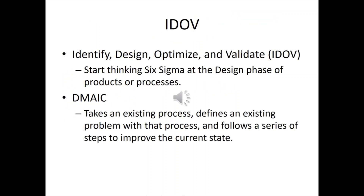The process I like to use for getting a new product or process: Identify, Design, Optimize, and Validate — and I do this not just on the product itself but also the process to make the product in the factory. Start thinking Six Sigma right from the beginning. And DMAIC also works, especially for an existing product — define the problem, measure, analyze, improve, and control. It's about improving the current process.